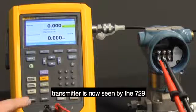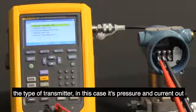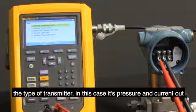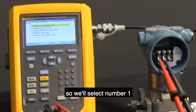Then, we're going to go to Tasks and select the type of transmitter. In this case, it's Pressuring Current Out, so we'll select number 1.